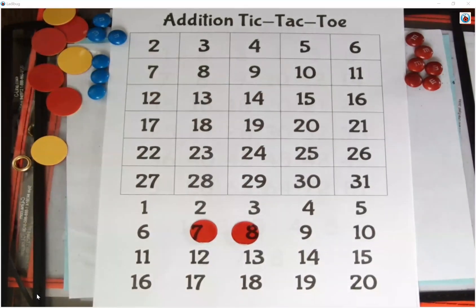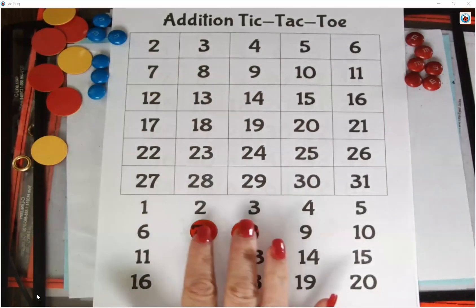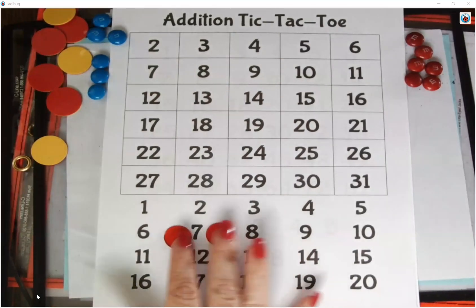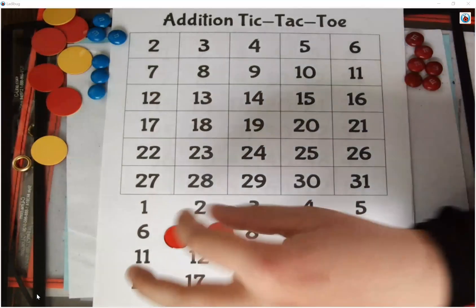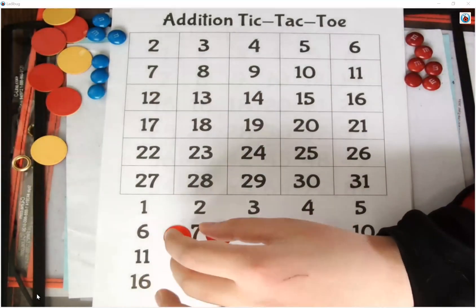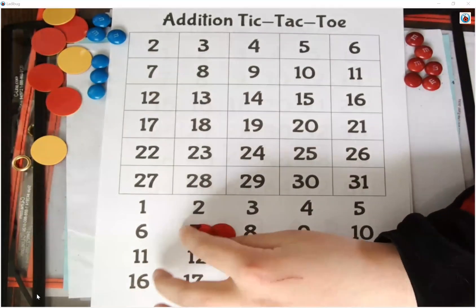To play this game, the person who goes first is going to use these two clear counters to cover over two parts or two addends down here at the bottom of our board. Brett, do you want to go first or do you want me to go first? I'll move first. Okay, so he's going to take those and cover over any two parts he wants to.